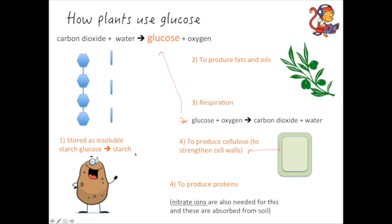Well, glucose comes together with something called nitrate ions. And these are absorbed by the plants through their roots from the soil. And these nitrate ions combine with the glucose to make those amino acids, which can then be made to make proteins.